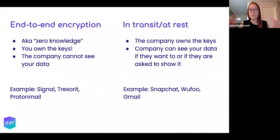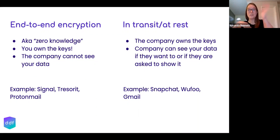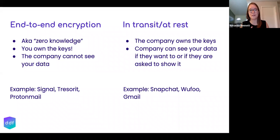There are two main different kinds of encryption. There's end-to-end encryption, which is also known as zero knowledge — that's when you own the keys, so the company can't see your data. The systems administrator looking at the wifi, or someone working at the ISP or at Google, can't see your information because you own the keys. Some examples of this are Signal, Tor, and ProtonMail.